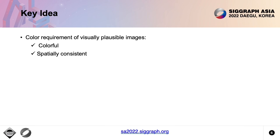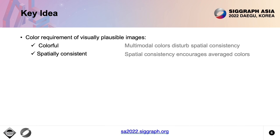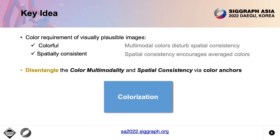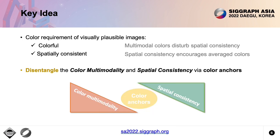According to our observation, visually plausible images should be colorful and spatially consistent. However, these two features may interfere with each other. On the one hand, colorfulness requires the correct modeling of multimodal colors, which tends to disturb spatial consistency. On the other, spatial consistency requirements encourage averaged color and harm color vividness. Motivated by this, we propose to disentangle the color multimodality and spatial consistency via global color anchors, so that both aspects can be achieved effectively.